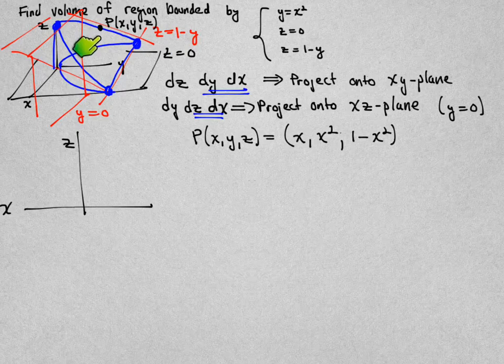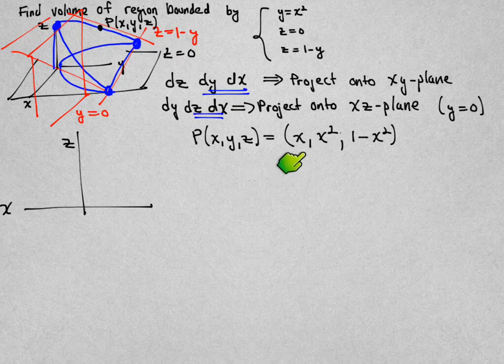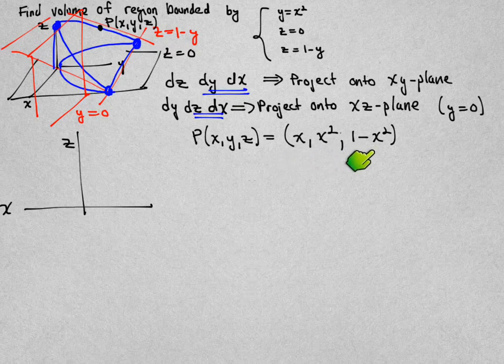So the point here living on this outer edge of the surface that we're trying to find the volume of has coordinates x, x-squared, and one minus x-squared.